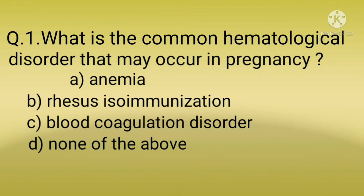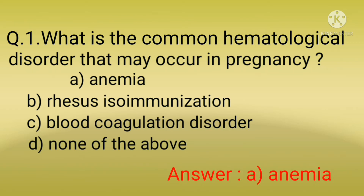The correct option is option A, anemia. Anemia means lack of blood. According to the standard laid down by the WHO (World Health Organization), anemia in pregnancy is present when the hemoglobin concentration in the peripheral blood is 11 gram per 100 ml or less. During pregnancy, plasma volume expands maximum around 32 weeks, resulting in hemoglobin dilution. For this reason, hemoglobin level below 10.0 gram per deciliter at any time during pregnancy is considered as anemia.